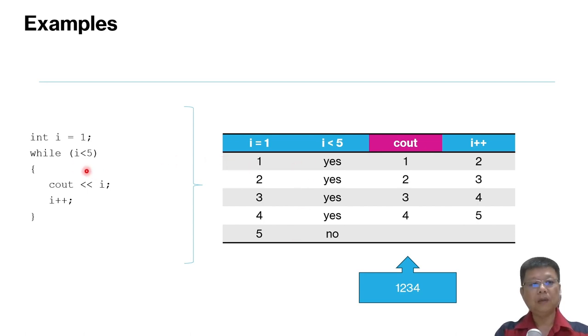I hope you get the same answer. First line, we will go for int i equal to 1. And then we will go for the while loop to check the condition, whether it fulfills i smaller than 5. If yes, we just write yes. Next, we go to the inner part of the while loop, cout i. The i here in this case is 1. And then i++ becomes 2. So the process repeats and repeats until 5. You check the conditions, it's fail.